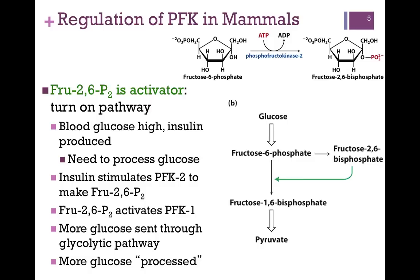Here's how this regulation works. As blood glucose increases, the hormone insulin is produced in response, and that signals cells in multiple tissues and organs that blood glucose is present and needs to be taken inside the cell and processed. The main way to process glucose is the glycolytic pathway. Insulin also stimulates PFK2, and that elevates the concentration of fructose 2,6-bisphosphate. As that concentration increases, it binds to PFK1 and elevates its activity, so in the end we get more glucose processed through glycolysis.